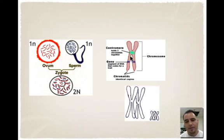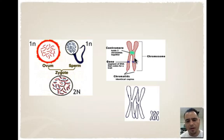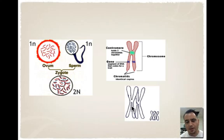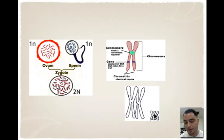Here we have a chromosome. You have a centromere, which is a protein disc that holds these two chromatids together. Chromatids are identical copies — you have one, and then in replication you get another molecule. Genes are segments of DNA that code for a protein or a trait. And here we have homologous chromosomes — chromosomes that have the same size, shape, and banding patterns, and they carry the same genes.